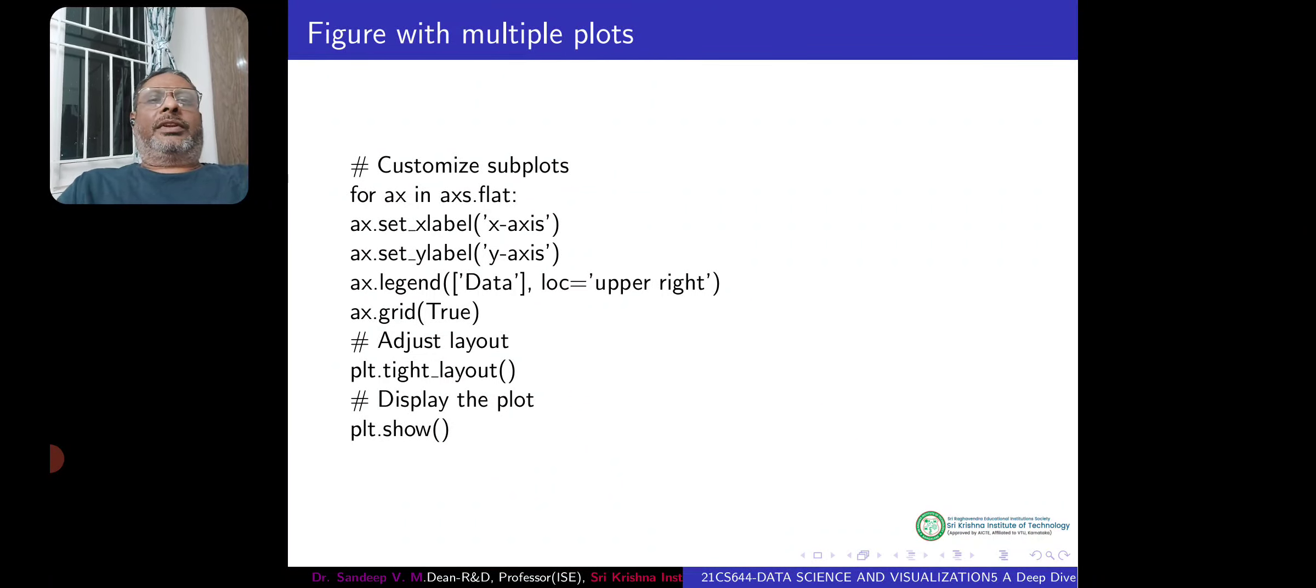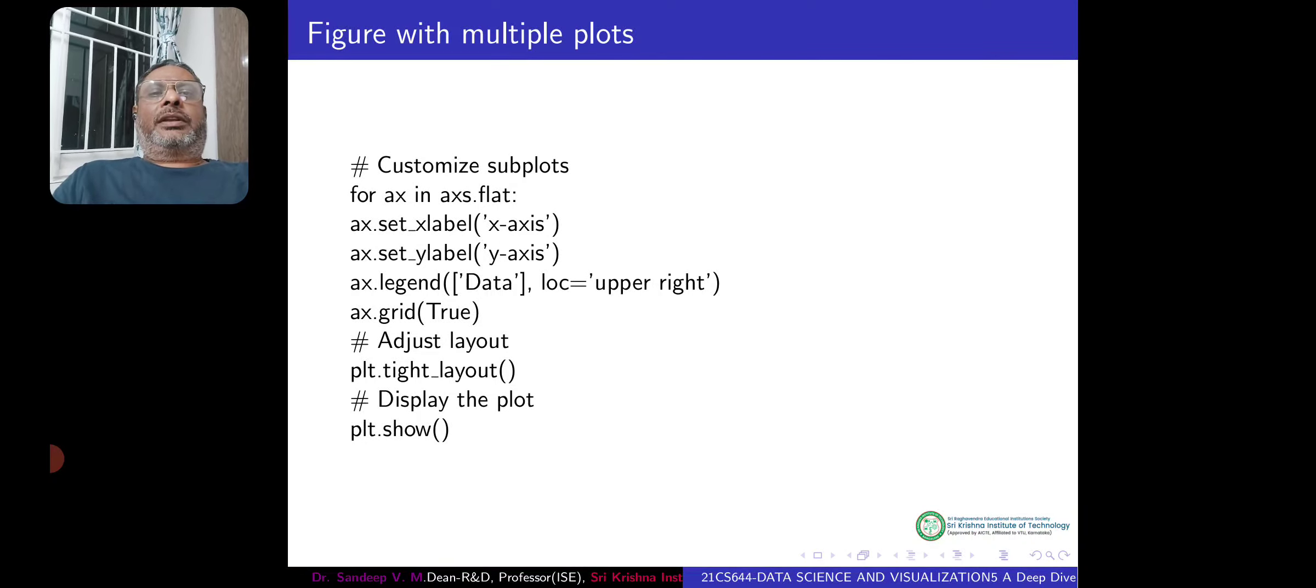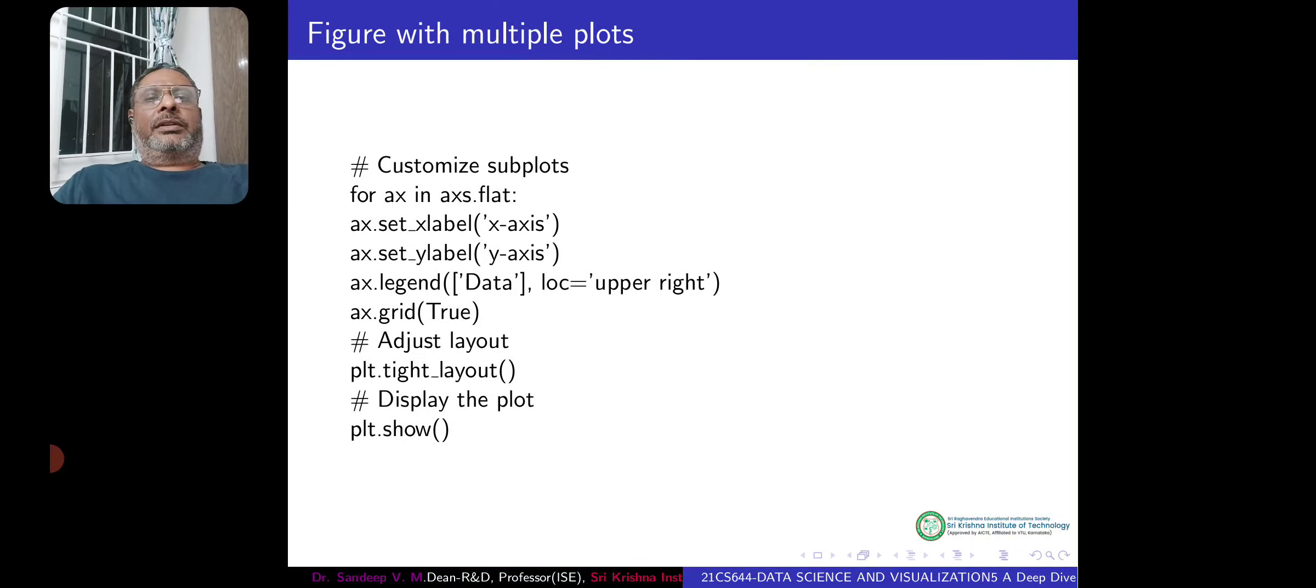And before that, we are making some customization. So for ax in axs.flat, we set both the labels: set_xlabel as x-axis, set_ylabel as y-axis. Do we want grid? Yes, we want a grid. Do we want a tight layout? Yes, we do want a tight layout. And then at the end, we say show the plots.